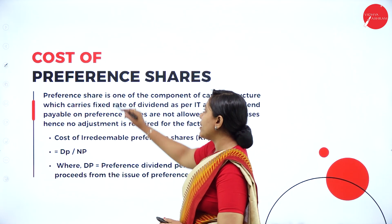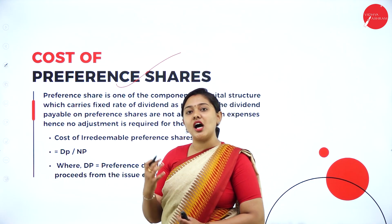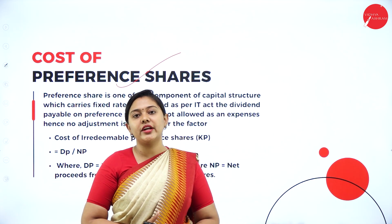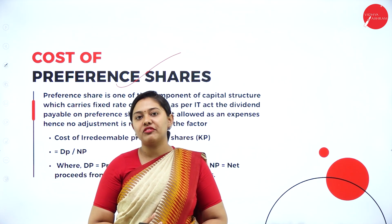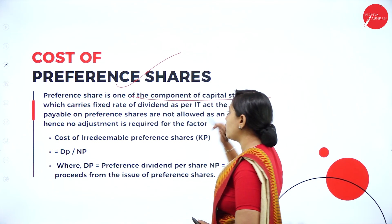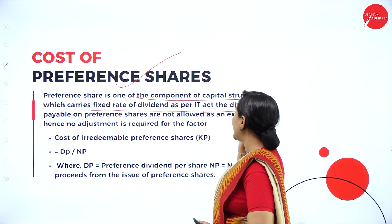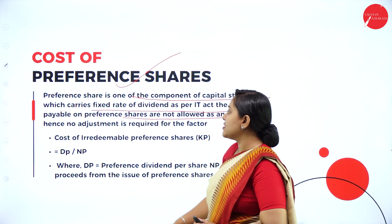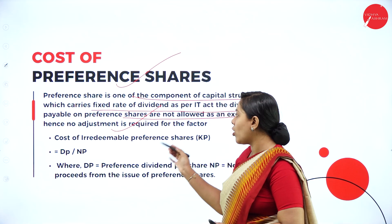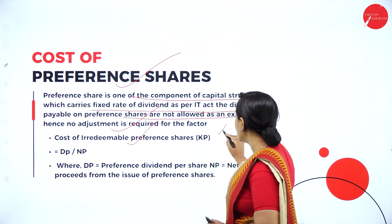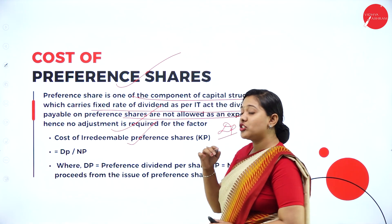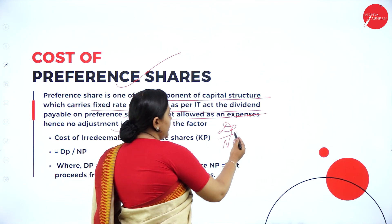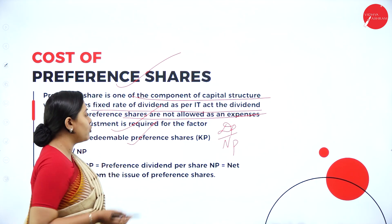Next we have preference shares. Preference shareholders have a preferential right over their dividend irrespective of earnings. Preference shares are a component of capital structure carrying a fixed rate of dividend. As per the IT Act, preference dividends are not allowed as expenses, so no tax adjustment is required. The formula for cost of irredeemable preference shares is: Preferential Dividend divided by Net Proceeds.